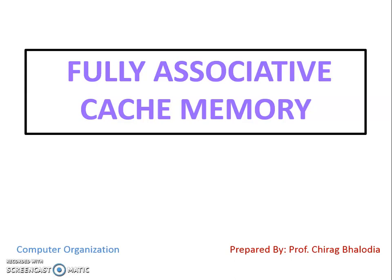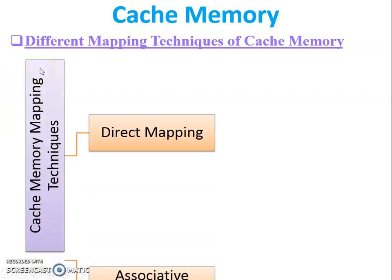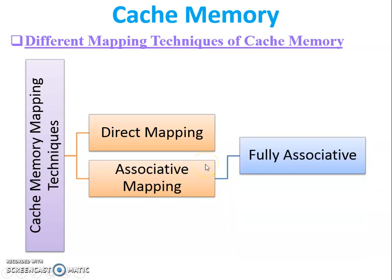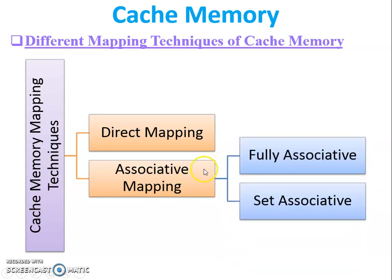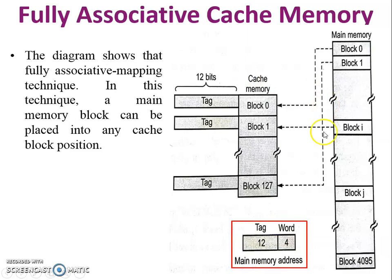Hello friends, myself Chirak Palodia. Today I'm going to teach you fully associative cache memory, a topic of computer organization and architecture. First of all, there are different mapping techniques: direct mapping and associative mapping. Associative mapping is divided into two parts — fully associative and set associative. Today I'm going to teach you fully associative.